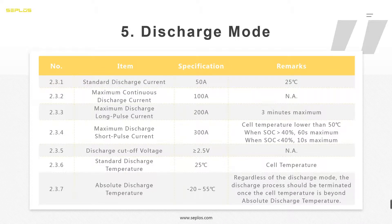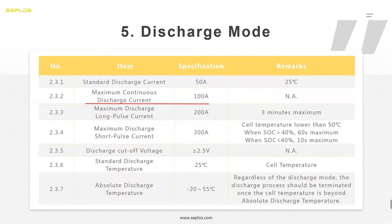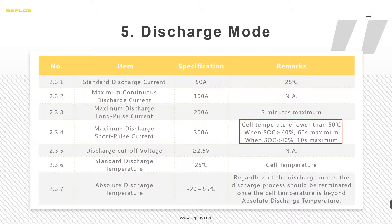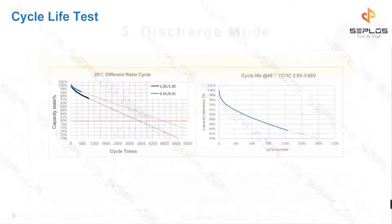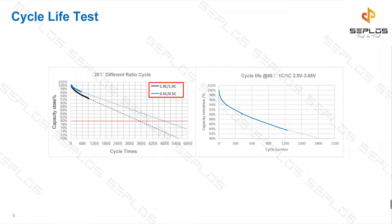Next is the discharging section. For a 100Ah cell, the standard discharge current is 50A and the maximum continuous discharging current is 100A. If you need 200A, it can only be supported for three minutes. If you need 300A, the cell temperature must be less than 15°C, and when SOC is above 50% it can support 60 seconds, but when SOC is below 40% it can only support 10 seconds.